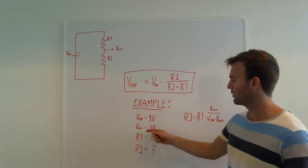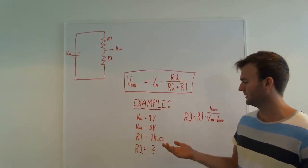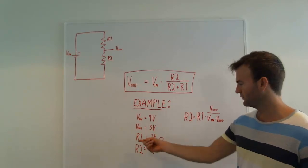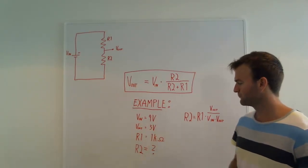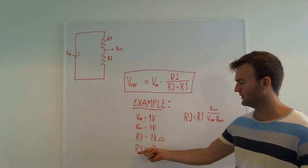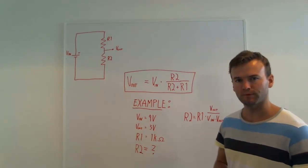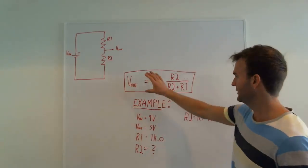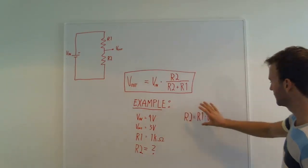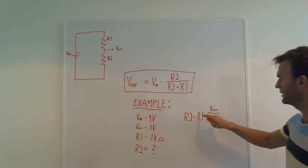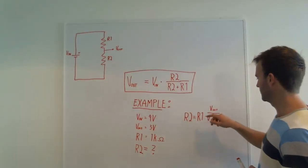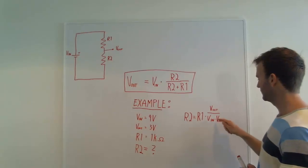Then we need to choose R1 or R2. So let's say we just choose R1 to be 1 kiloohm. Then what value do we need for R2? The way to figure that out is to first rearrange this formula into this one. We get R2 equals R1 times V out divided by V in minus V out.